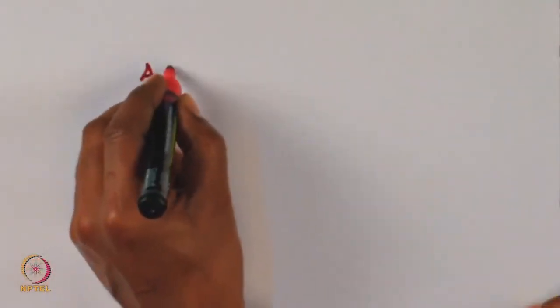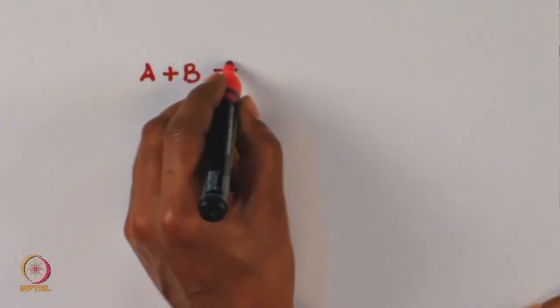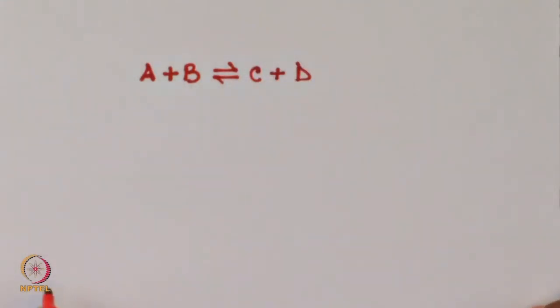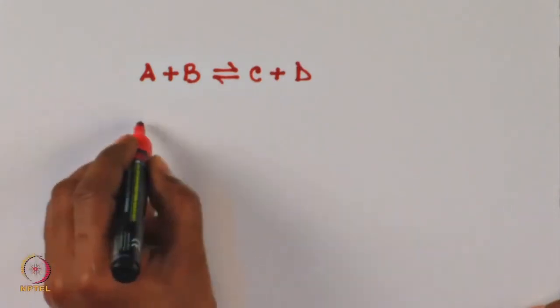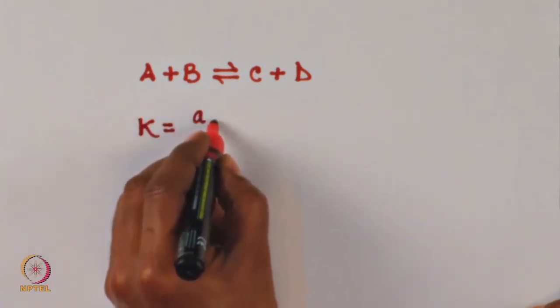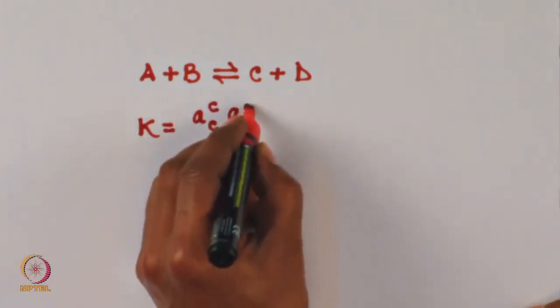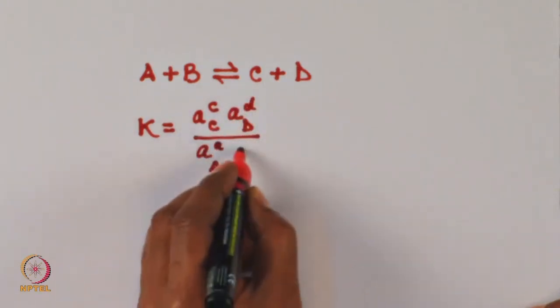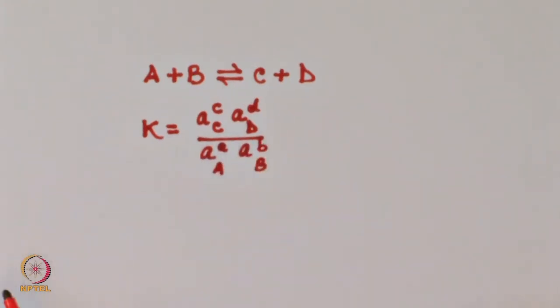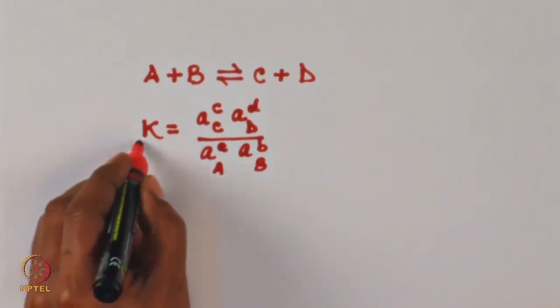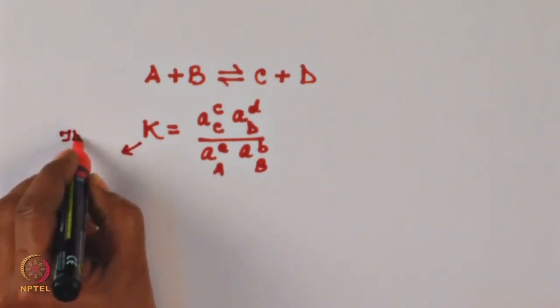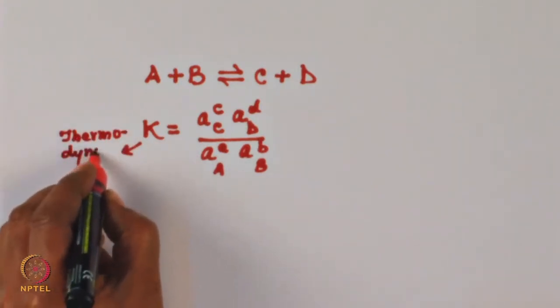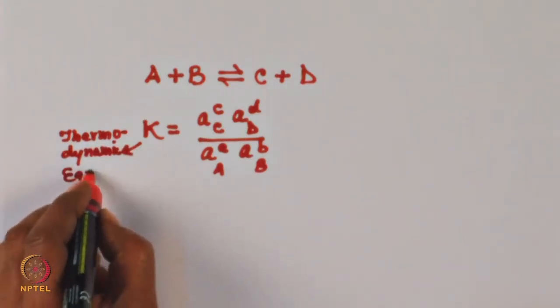Usually, we call the thermodynamic equilibrium constant the ratio of activities. If I consider A plus B is in equilibrium with C plus D, then the thermodynamic equilibrium constant K is written as activity of C raised to the power c, times activity of D raised to the power d, over activity of A raised to the power a times activity of B raised to the power b. This is the thermodynamic equilibrium constant.